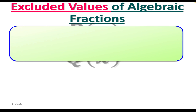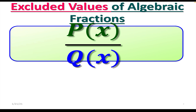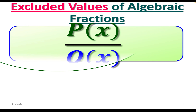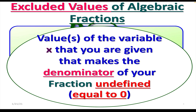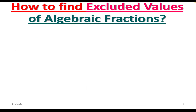Let's focus on excluded values of algebraic fractions. Say we have algebraic fraction p over q. The excluded value — or values, since there could be more than one — of the variable x are the values that make your denominator, the bottom of your fraction, equal to zero. The values of x that make your denominator equal to zero are called excluded values.